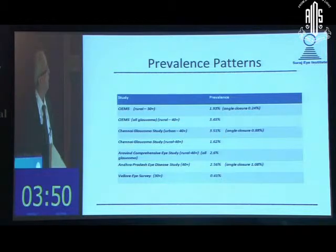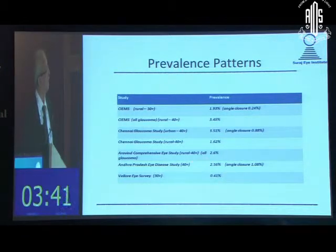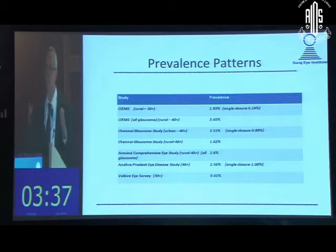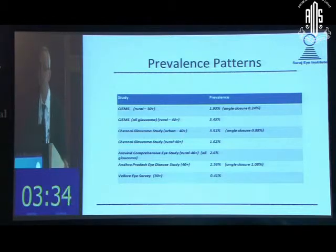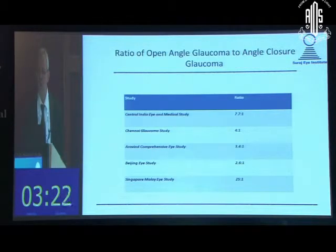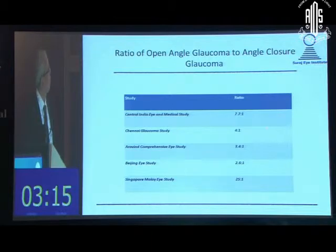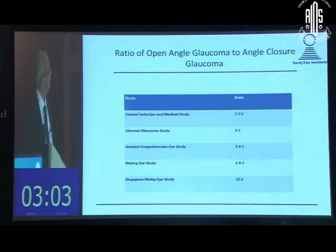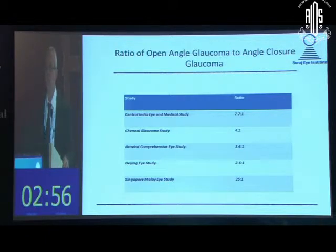Studies have been done across the country, mainly concentrated in south India, suggesting a prevalence of roughly three to four percent across different regions, with many factors involved in regional variation. The ratio of open angle to angle closure glaucoma continues to be intriguing — it was highest in central India's rural community, but tends to shift toward primary angle closure in the Chennai Glaucoma Study, the Aravind study, the Beijing Eye Study, and the Singapore Malay Study, suggesting primary angle closure glaucoma is more common in South India.